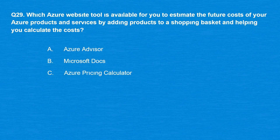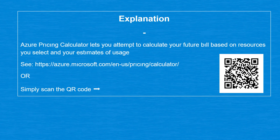Question 29: Which Azure website tool is available for you to estimate the future costs of your Azure products and services by adding products to a shopping basket and helping you calculate the costs? Option A: Azure Advisor. Option B: Microsoft Docs. Option C: Azure Pricing Calculator. The correct answer is Option C, Azure Pricing Calculator. It lets you calculate your future bill based on resources you select and your estimates of usage.